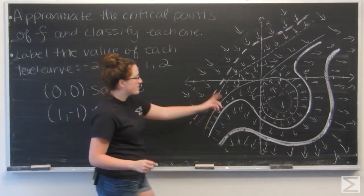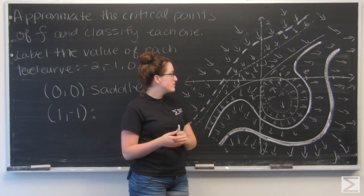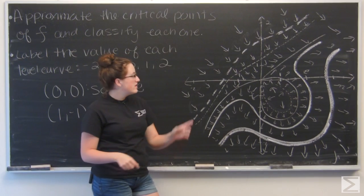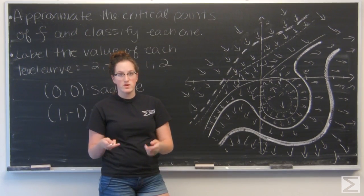And with those concentric circles, I'm either looking at a local minimum or a local maximum. And to tell which one, I want to look at the direction that the gradient vectors are pointing. So the gradient vectors are going to point in the direction of greatest increase.